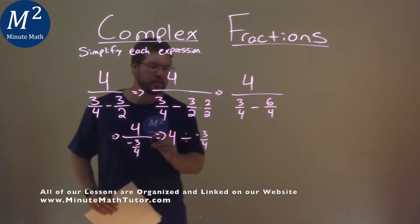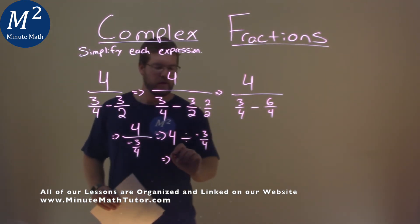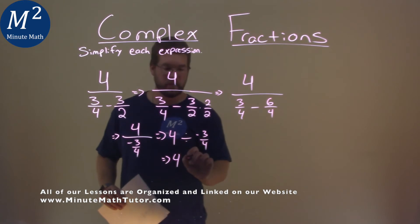This makes it a little easier to see when we have 4, and instead of divided by, we can multiply, flip the fraction, and negative 4 thirds now.